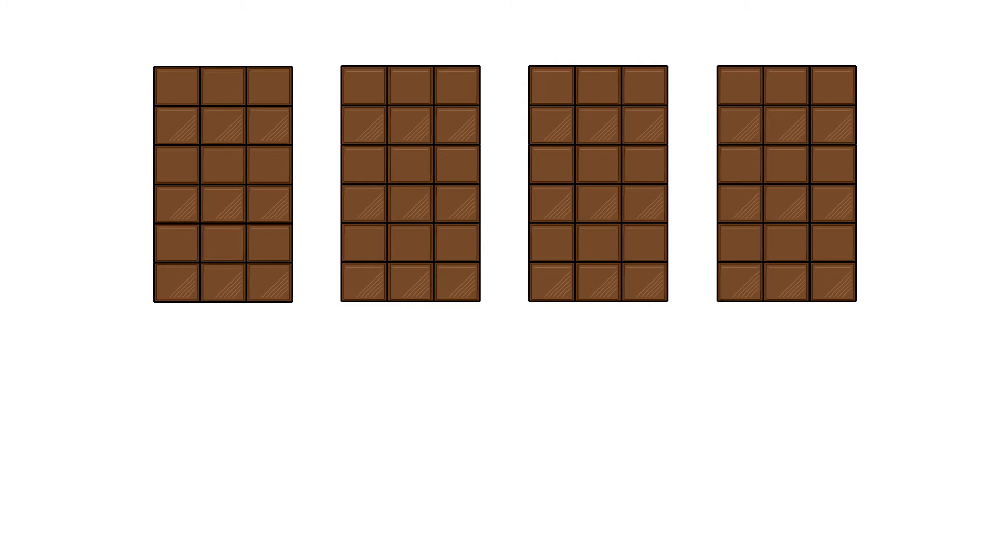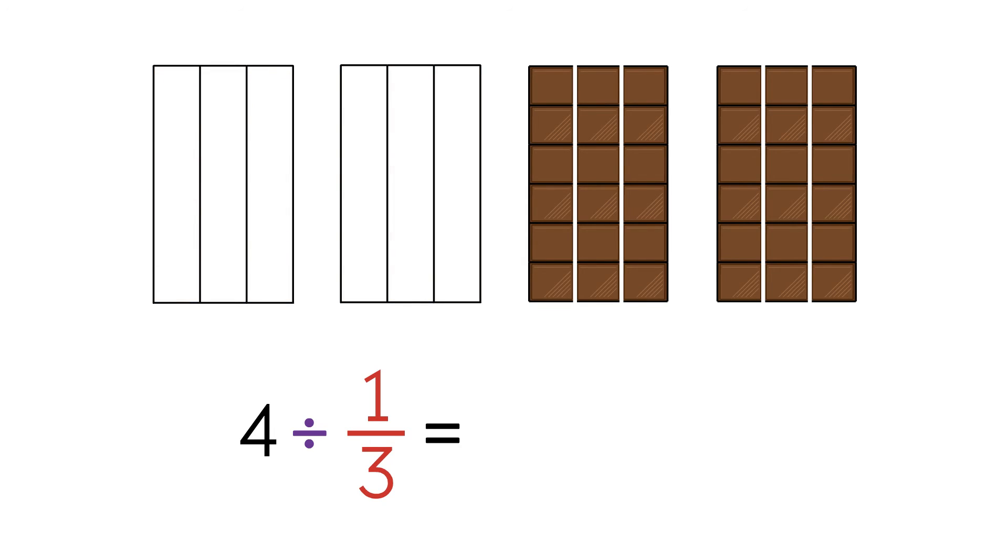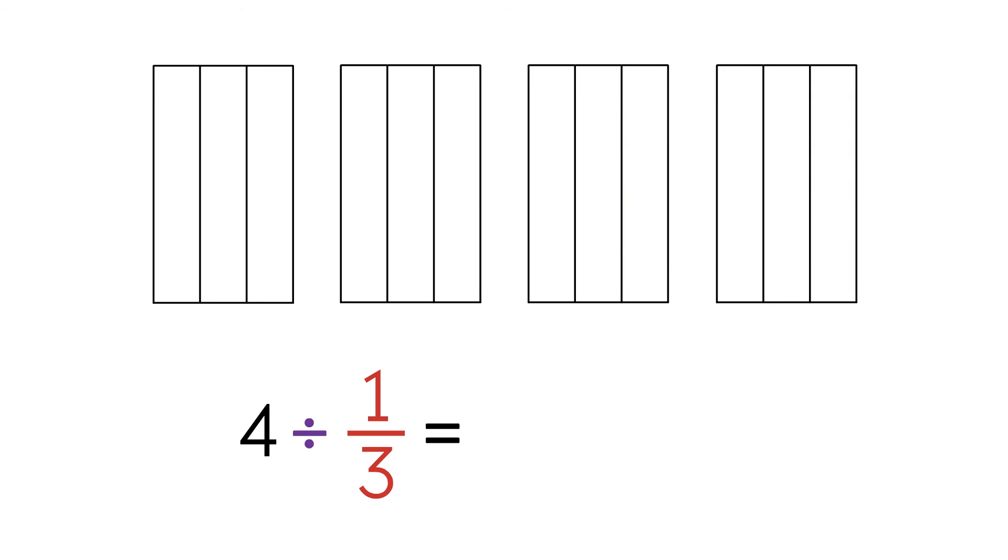Let's do another one. We have 4 chocolate bars, and we divided them into thirds. How many pieces of chocolate bars do we have in all? We need to solve 4 divided by 1 third. Let's draw a diagram. Each chocolate bar has 3 pieces, so the total number of pieces is 3 plus 3 plus 3 plus 3, which is the same as 4 times 3, which gives us 12.